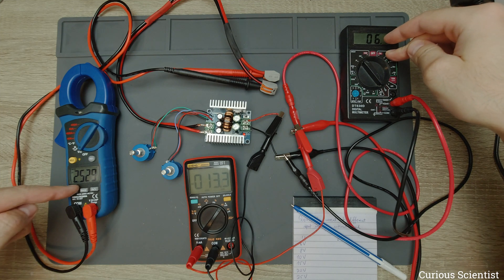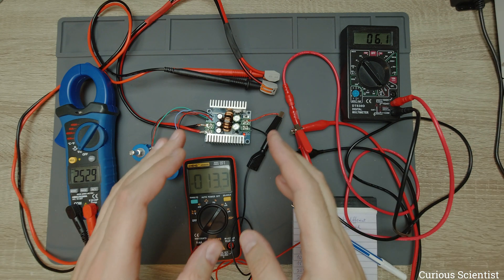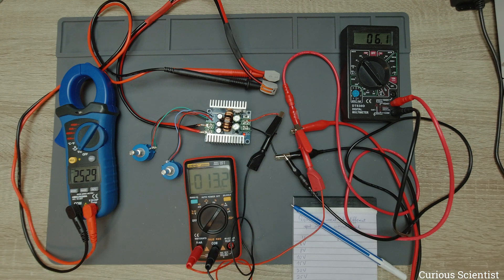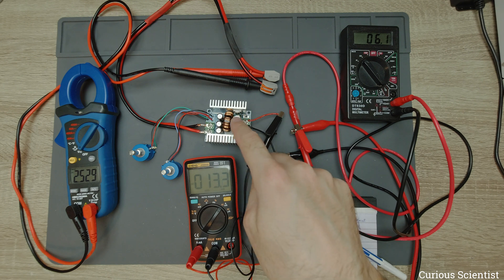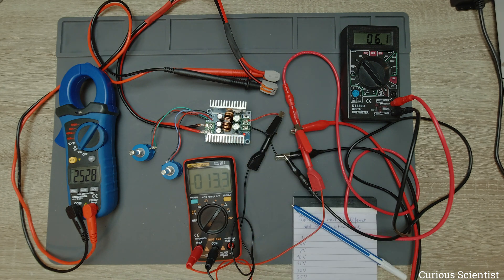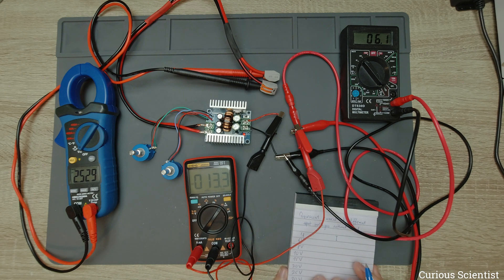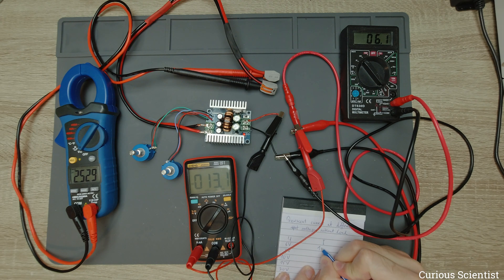Now the output voltage is 2.5 volts, because this 6 volt is actually the minimum. I think that this DC-DC converter does not perform very well at the minimum voltage. Nevertheless, we note down that we have 13.3 milliamps.